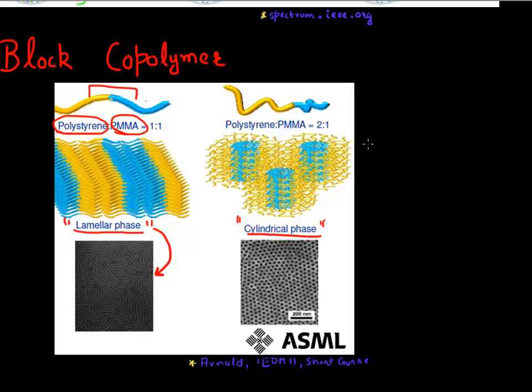The important thing to note here is that you get from using this self-assembly, what you get is a short range order. But you don't get a long range order. So you can get these very nice small features, which are anywhere from 5 to 30 nanometer, depending upon the size of the polymer. But there's no long range order of these features.